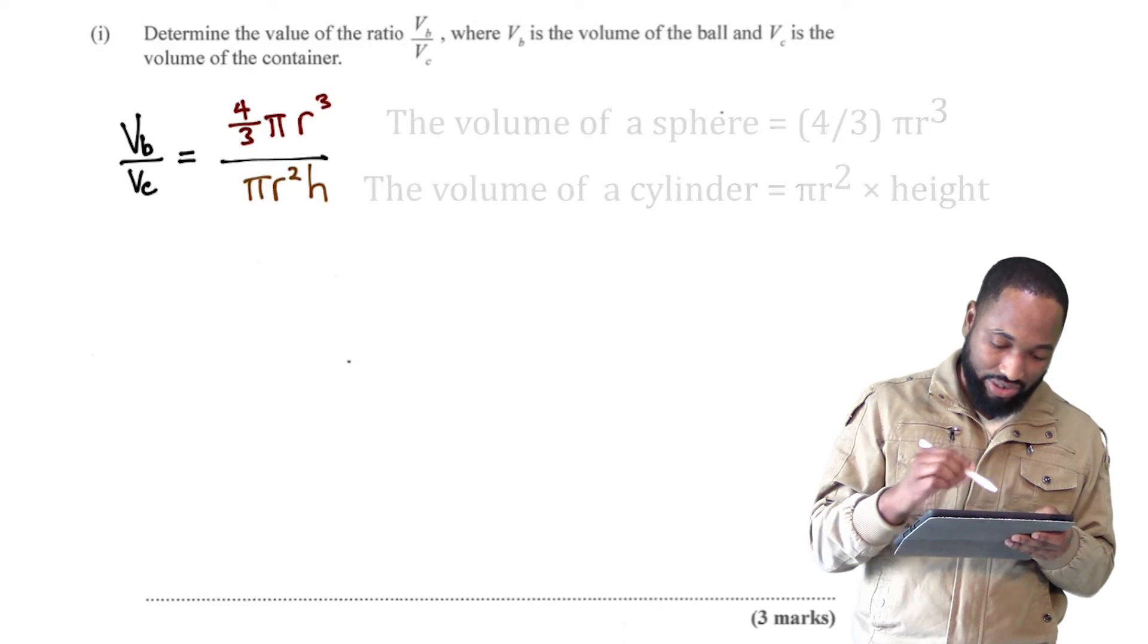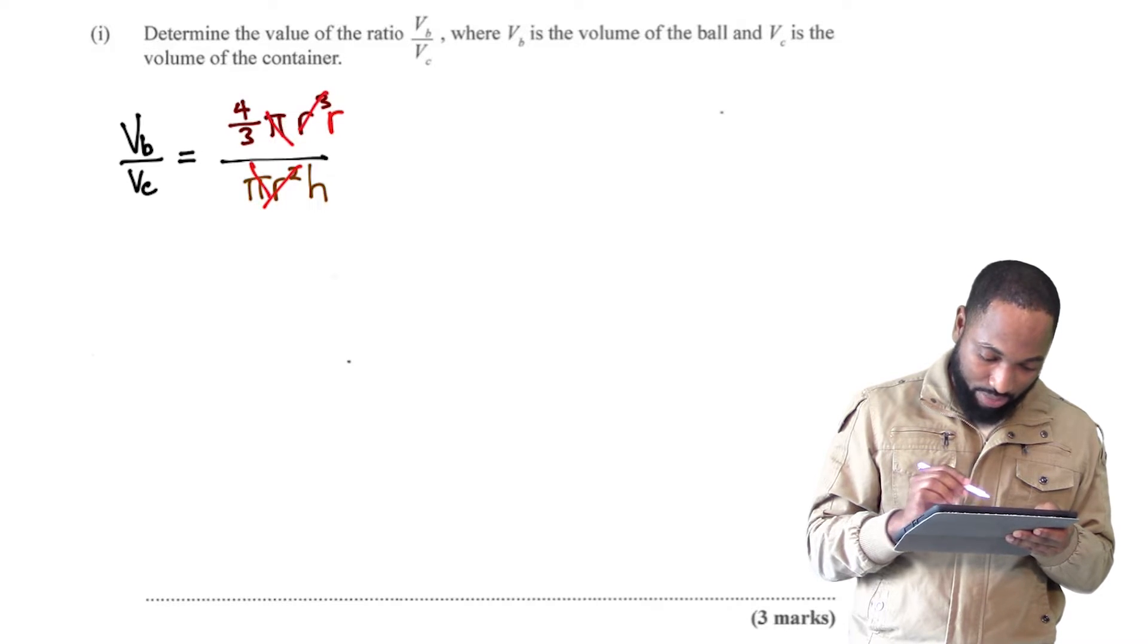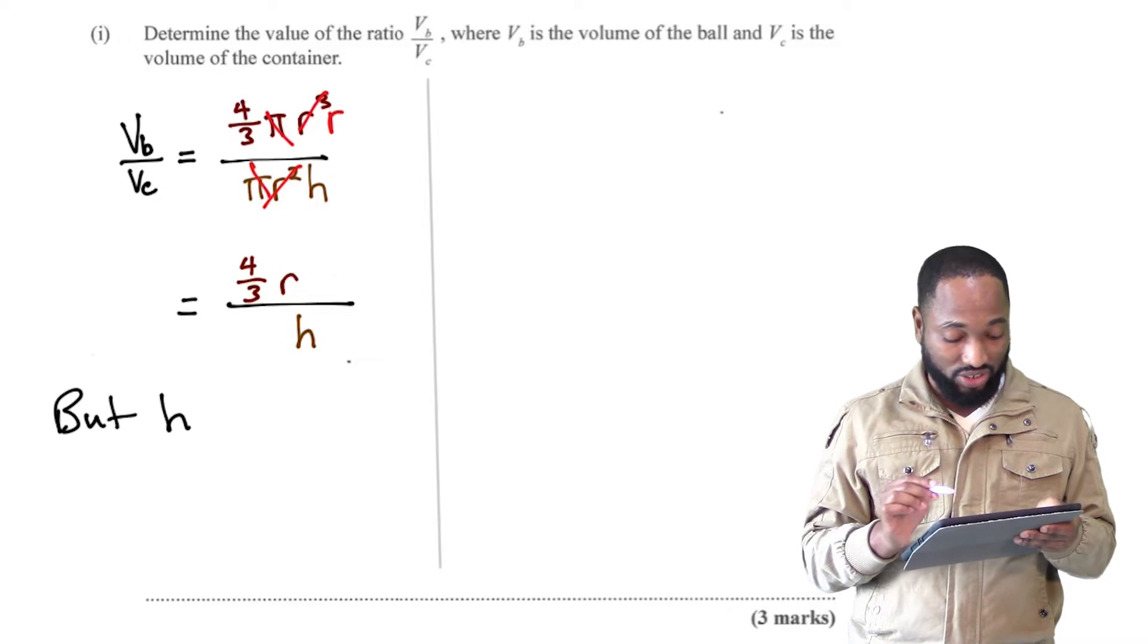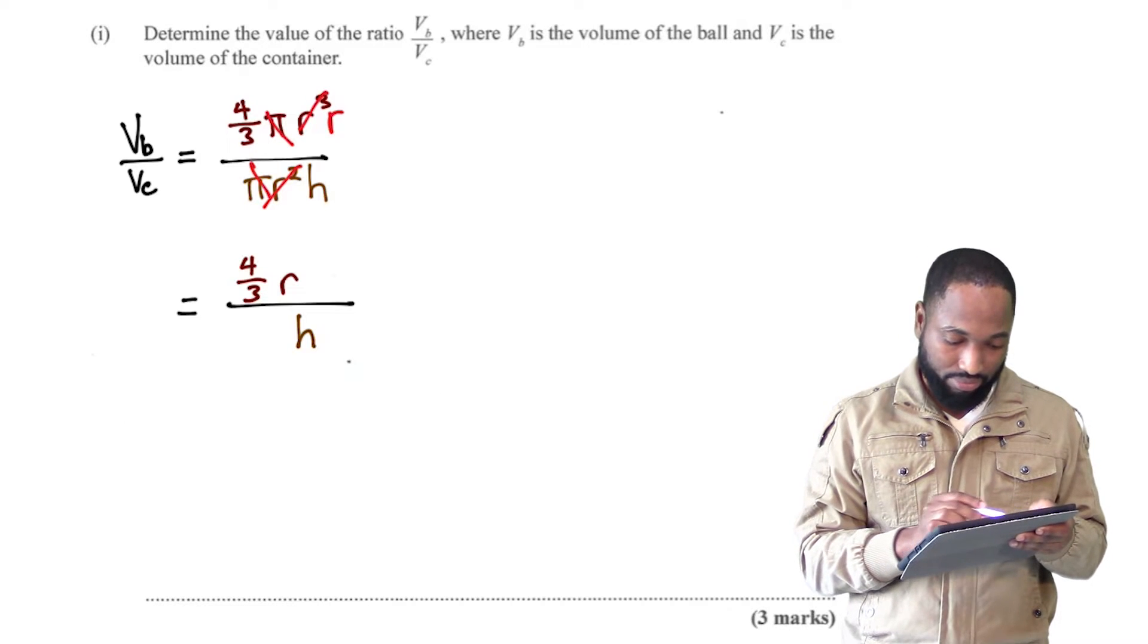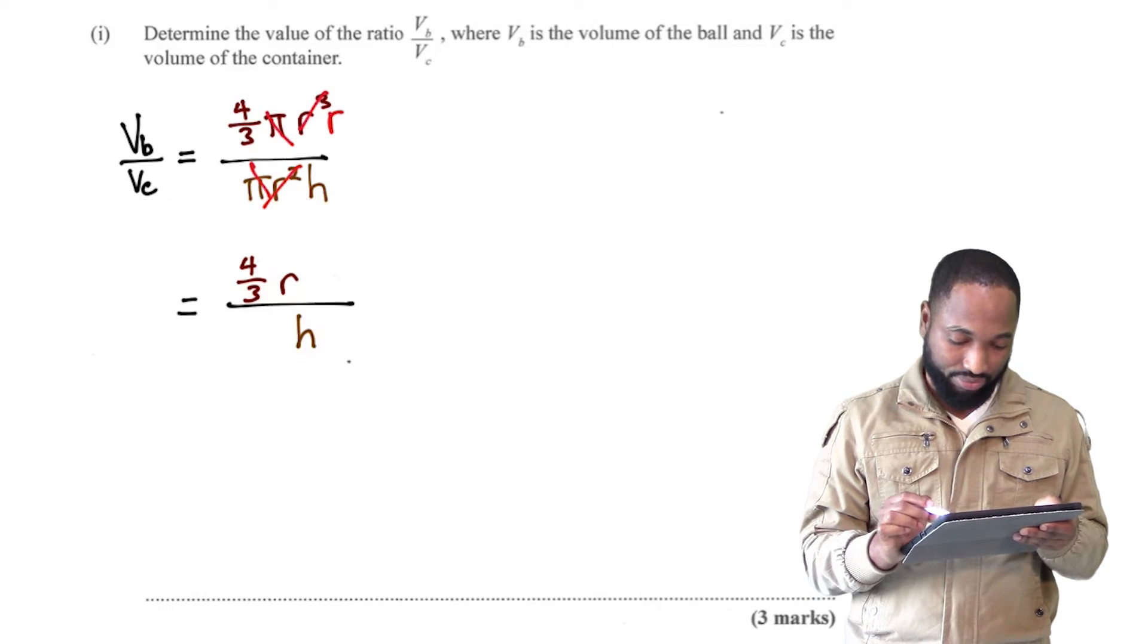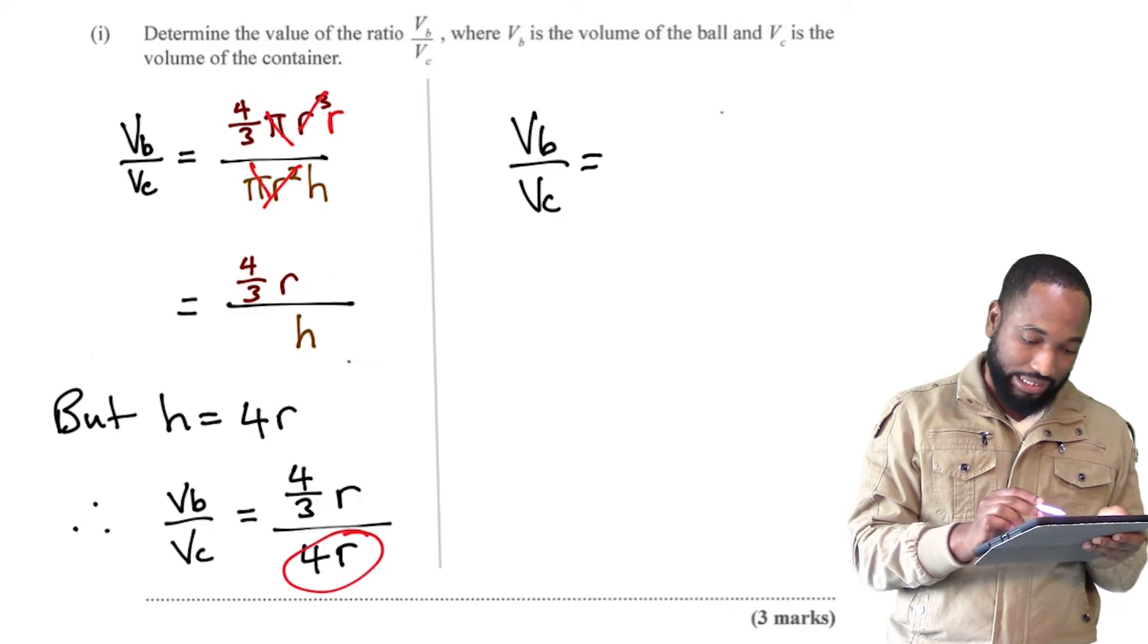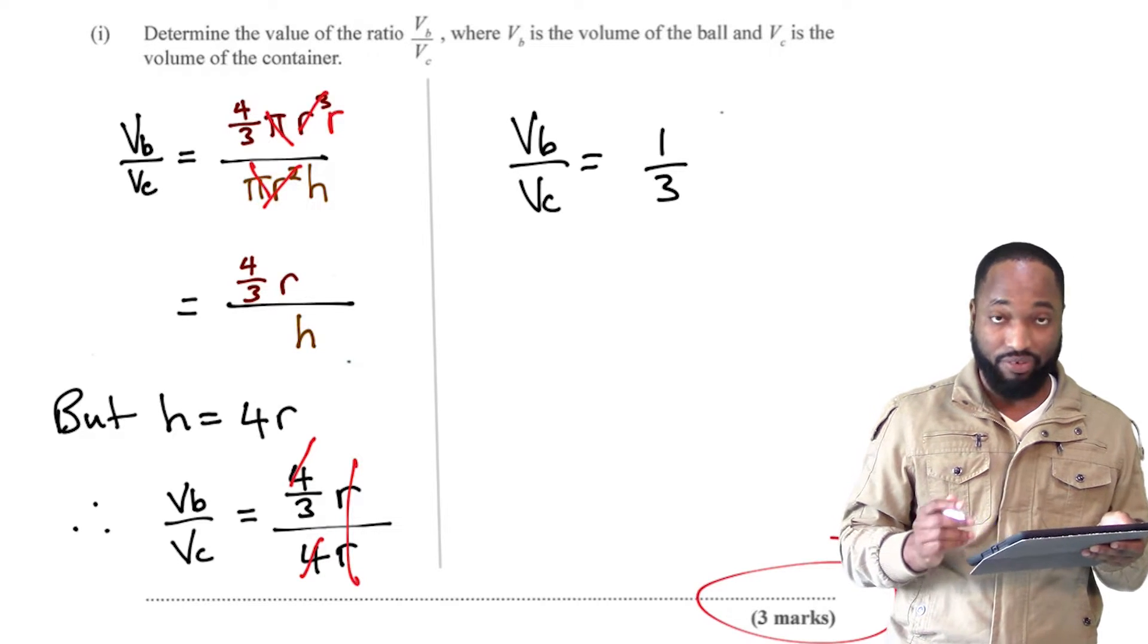So now if I just do some little cancellations here to begin with, I should just end up with four thirds r and just the h. But remember, the h is actually equal to four r. You all remember that, the height is actually four r that was given in the question. This means that if I replace h with four r, I would be able to cancel the r and the four and I will just end up with a nice one third. And that went for three marks.